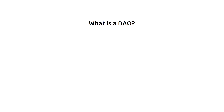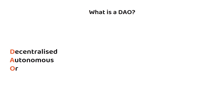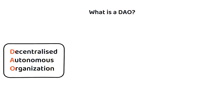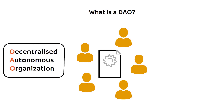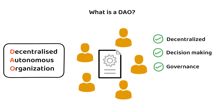Let's start with DAO, or Decentralized Autonomous Organization. A DAO is an organizational structure that operates through smart contracts, allowing for decentralized decision making and governance. DAOs aim to eliminate the need for traditional centralized authorities when running the network.